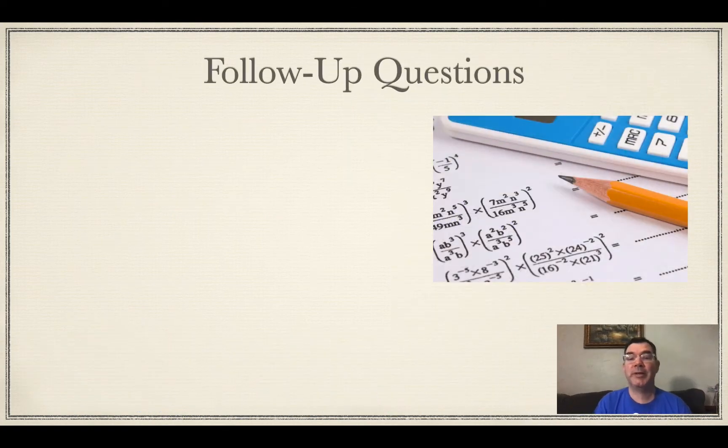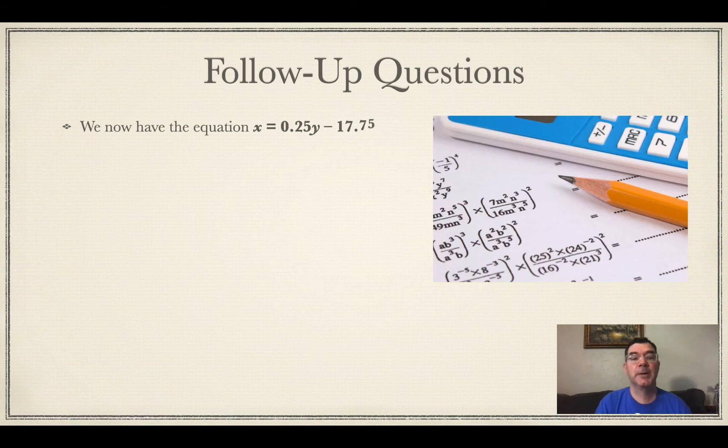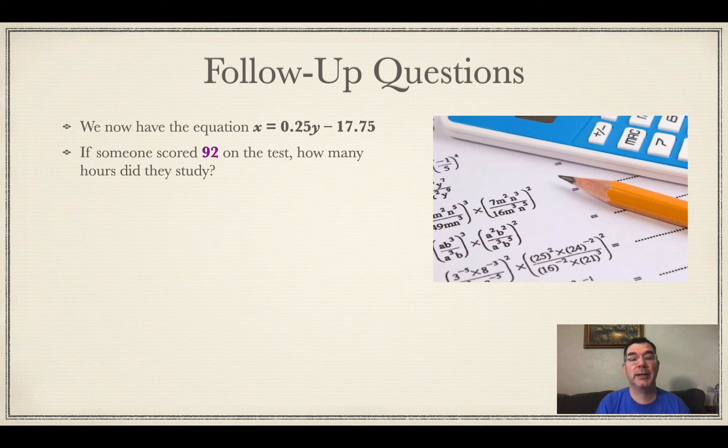Alright, so maybe there's some follow-up questions to this. We now have this equation and now we can use different variables of X and Y that weren't in the table to try and figure out the matching data point that goes with it. So let's say someone scored a 92 on the test. How many hours did they study? Well, 92 is a Y value so I plug that in and I get an X value of 5.25 hours. That's what I could approximate or predict is the number of hours that they studied.